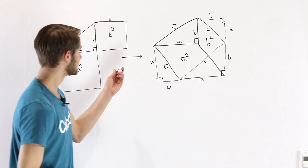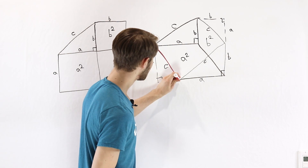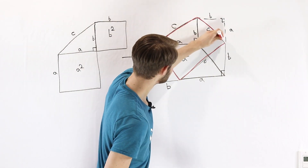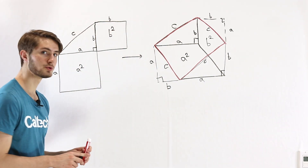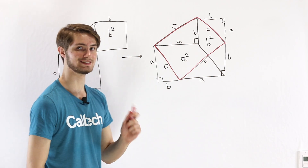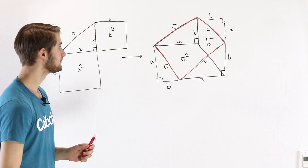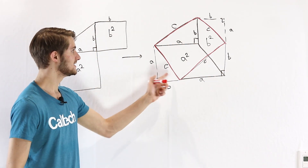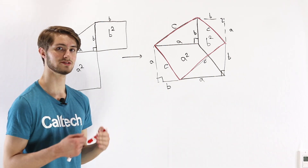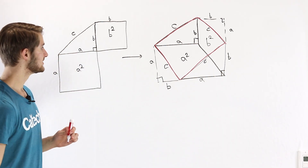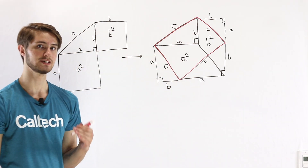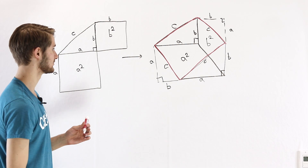So if we think about the quadrilateral defined by these four sides, we have a four-sided shape where the length of each of those sides is c. Now we can't yet prove that this is a square because it could also be a rhombus where all the sides are equal. So instead we need to prove that some of these angles are 90 degrees, and then we can establish that it's a square.